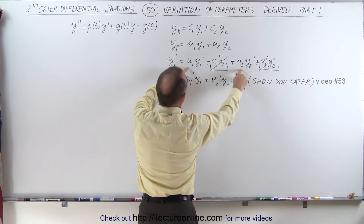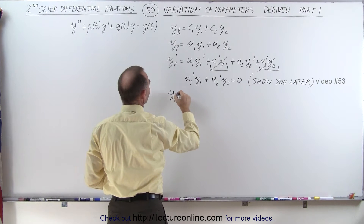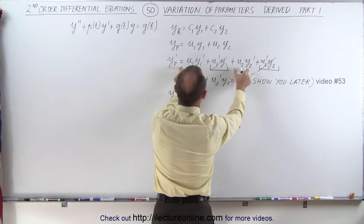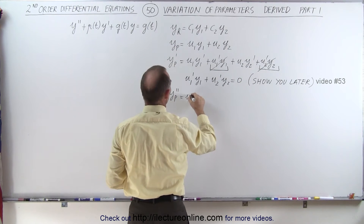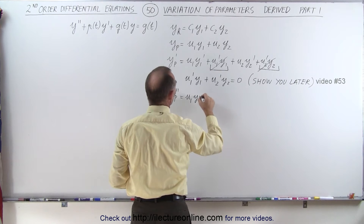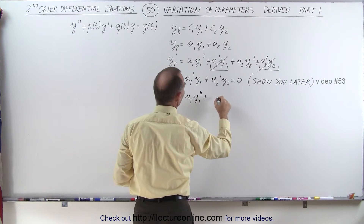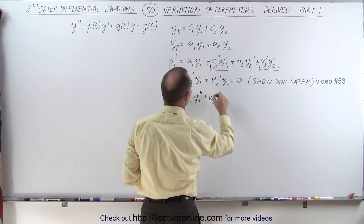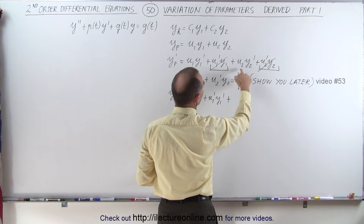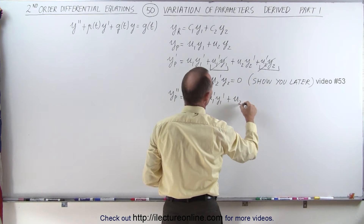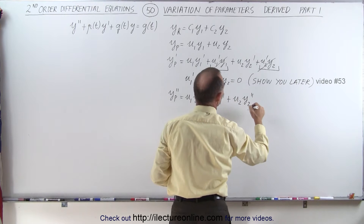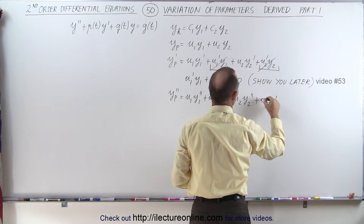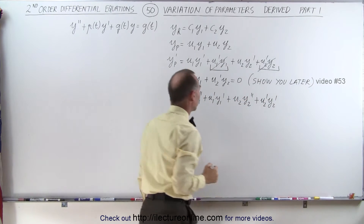That leaves us just with these two terms. So when we find y double prime — the second derivative of the particular solution — we again have two products, so we take u1 times y1 double prime, plus y1 prime times u1 prime. Plus the second product: the first term times the derivative of the second, plus the second times the derivative of the first.